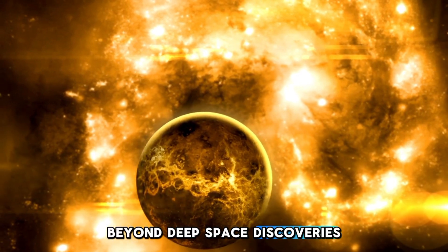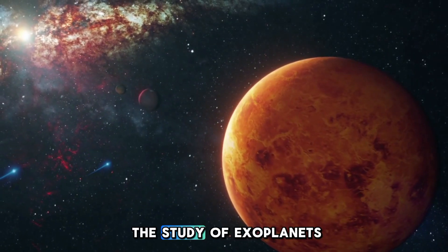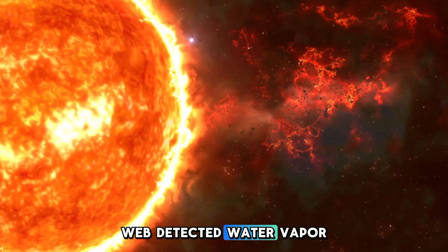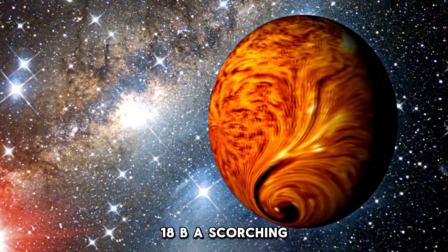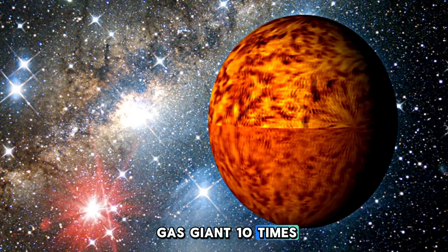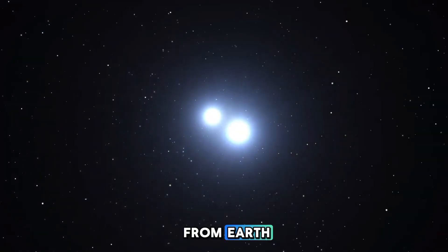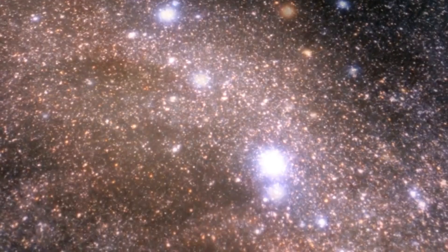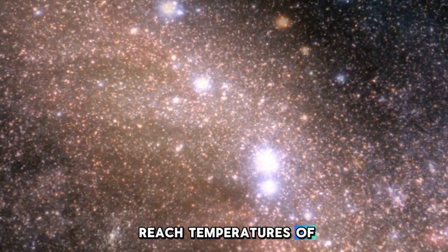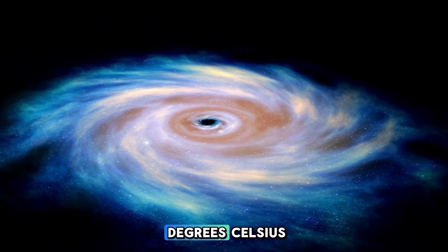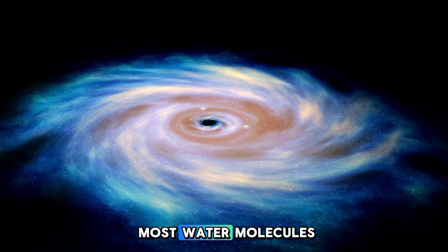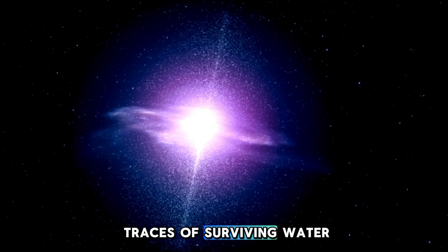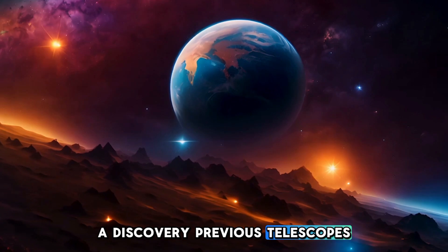A mysterious exoplanet with signs of water. Beyond deep space discoveries, JWST is also revolutionizing the study of exoplanets, worlds beyond our solar system. Recently, Webb detected water vapor in the atmosphere of WASP-18b, a scorching gas giant ten times the mass of Jupiter, located 400 light-years from Earth. WASP-18b orbits its star at a blistering distance of just 3.1 million kilometers, causing its surface to reach temperatures of 5,000 degrees Fahrenheit, 2,760 degrees Celsius, hot enough to disintegrate most water molecules. Yet, Webb's extraordinary sensitivity allowed it to detect traces of surviving water vapor, a discovery previous telescopes failed to make.